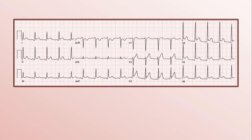To start us off, we have a middle-aged person with no significant past medical history who presents with two days of progressive, constant, non-exertional chest pain. The first thing you probably noticed was ST elevations in some leads, but if you look carefully, you'll see mild ST elevations in almost every lead. The combination of chest pain lasting more than a day and ST elevations that span more than one vascular territory is most consistent with pericarditis.